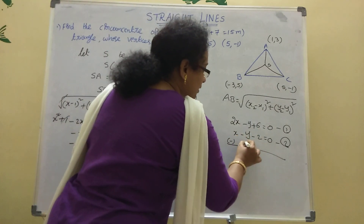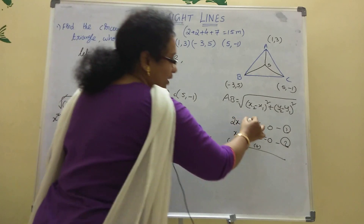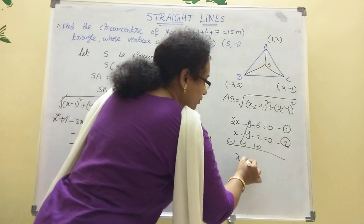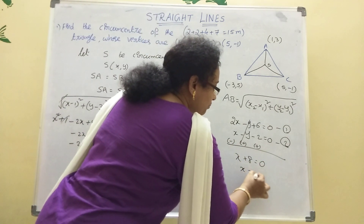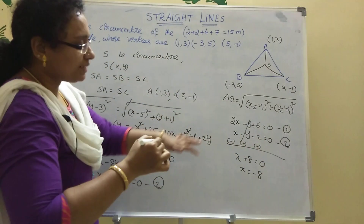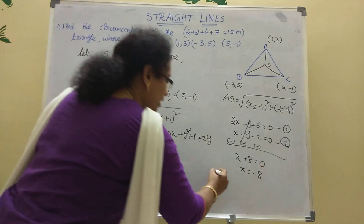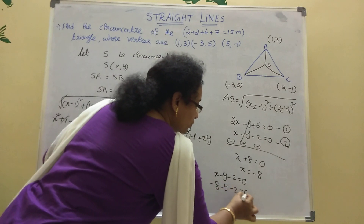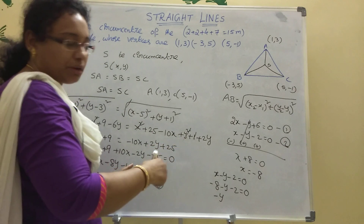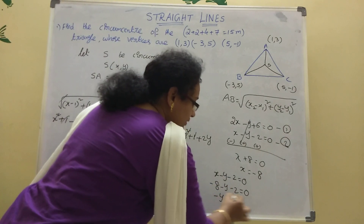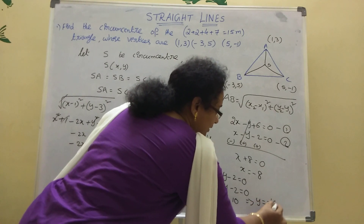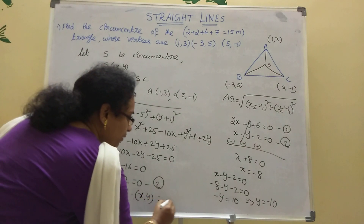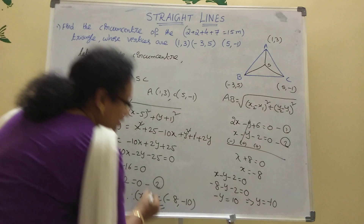Now subtracting the second equation from the first. After solving the simultaneous equations, we get x = -8 and y = -10. Therefore, the circumcenter is S(x, y) = (-8, -10).